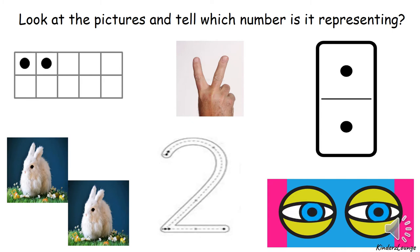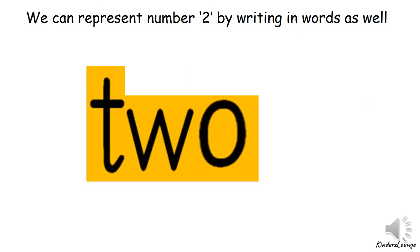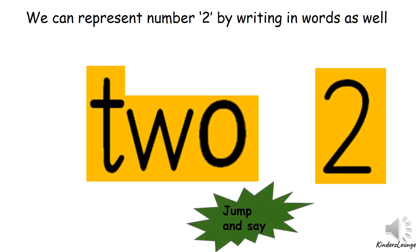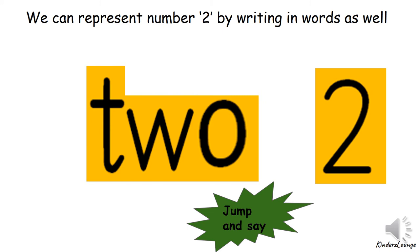Now let's learn how to spell number two in words. It's T W O — two. Well done! That's how we spell number two. What comes after number two?